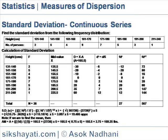So, standard deviation SD is equal to the square root of: sigma FD' squared by sigma F, minus (sigma FD' by sigma F) whole squared, into I, where I is the scale factor, that is 5.